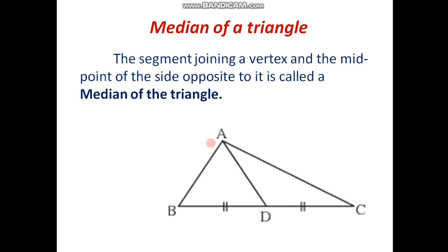So, in this case for triangle ABC, as A is the vertex of triangle ABC and point D is the midpoint of side BC which is opposite to the vertex A, segment AD is the median of triangle ABC.